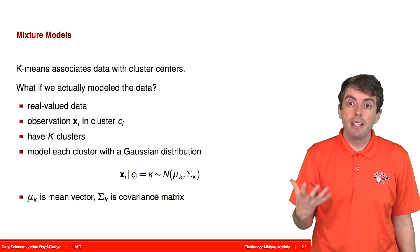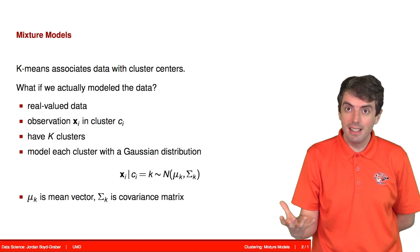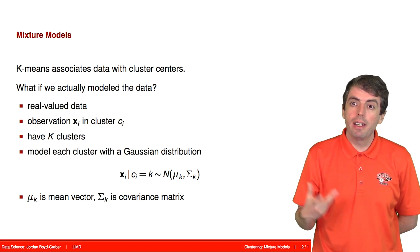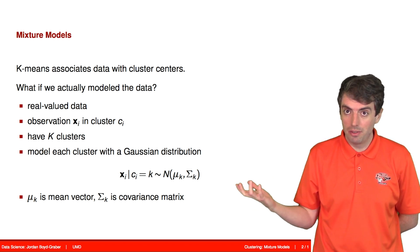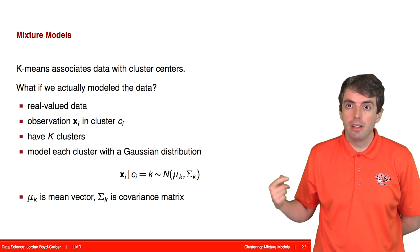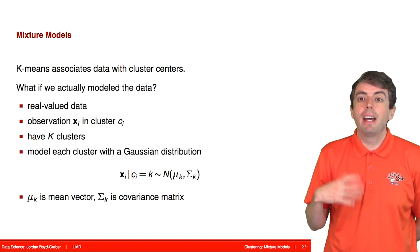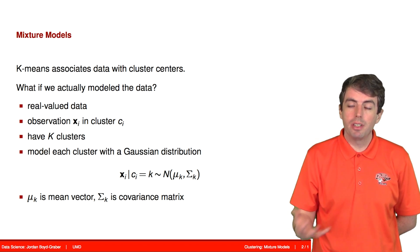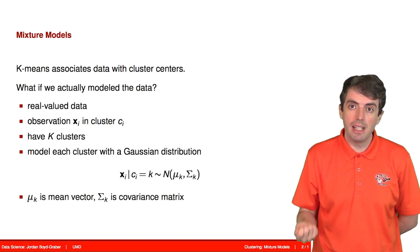So for k-means we had each cluster with a mean, which is why it's called k-means. Now we're going to have, in addition to a mean defining a normal distribution, we're also going to learn a variance. And that variance lets us capture properties of the data distribution that we couldn't with just a mean in k-means.